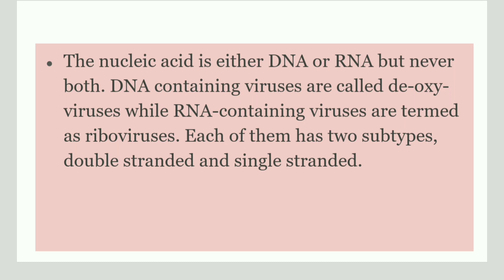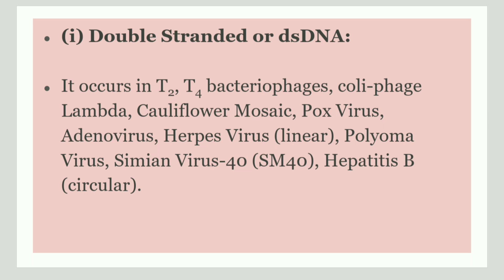Double-stranded DNA, or dsDNA, refers to viruses that have double-stranded DNA in them. Examples include bacteriophages — T2, T4, and lambda bacteriophages — as well as cauliflower mosaic viruses and pox viruses.